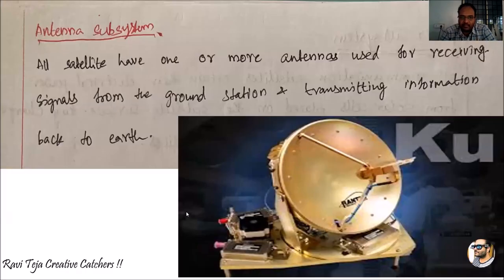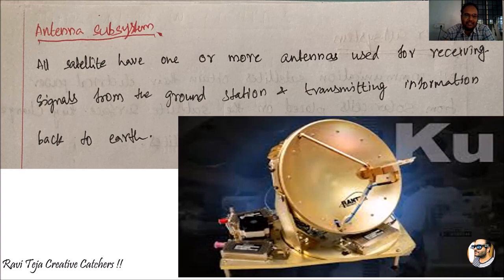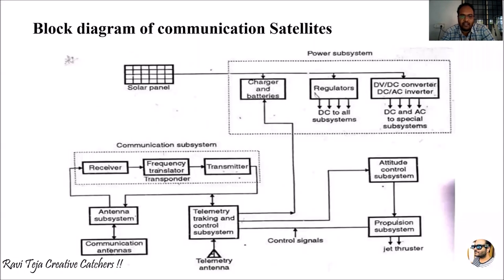Finally, the antenna subsystem: all satellites have one or more antennas — one for transmitting and one for receiving, or a single antenna used for both purposes. These antennas are mainly used for communication between the satellite and the earth station. The main purpose of communication satellites is to exchange data globally, using the help of satellites to gather information back to earth stations, which are facilities with large antennas that communicate with the satellite.